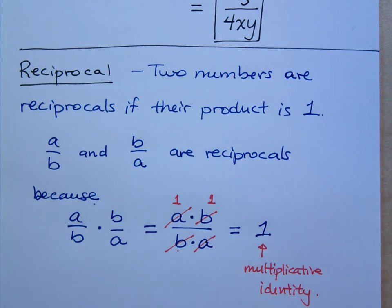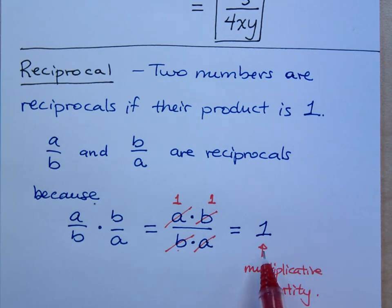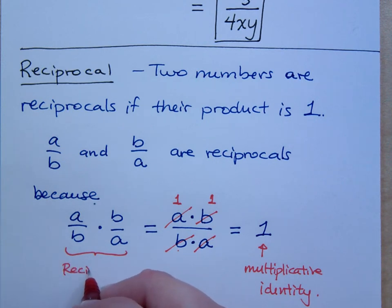The multiplicative identity is what you can multiply a number times and you won't change that number. You can multiply a number times one and it didn't change the meaning of the number. We could get an equivalent fraction, but it didn't change the meaning of the number. So this is a multiplicative identity and these guys right here, these reciprocals.